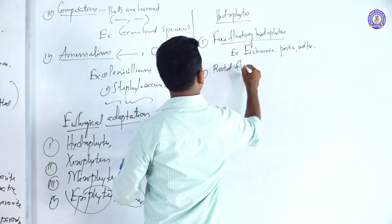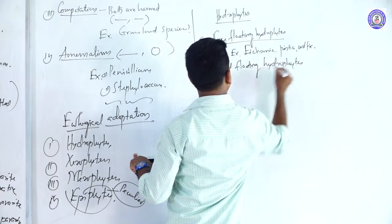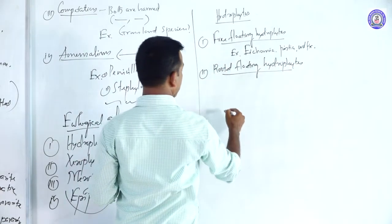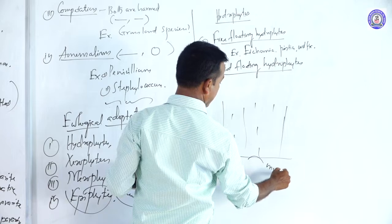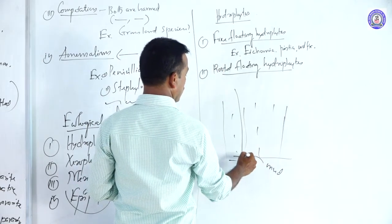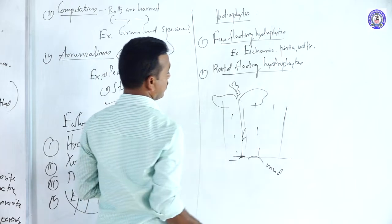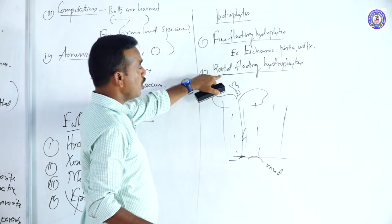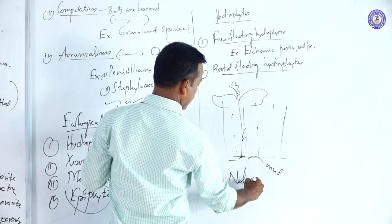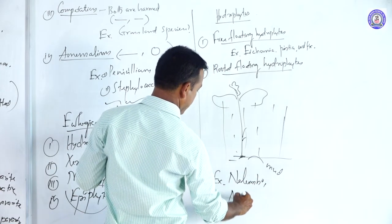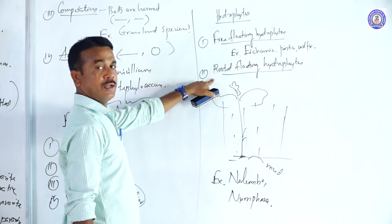Second type: rooted floating hydrophytes. These are plants whose leaves and flowers are present on the surface of water. Examples of rooted floating hydrophytes include Nelumbo and Nymphaea.